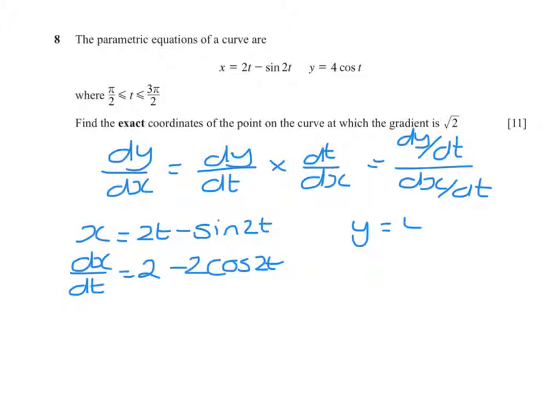And if y equals 4 cos t, then dy/dt is minus 4 sine t.